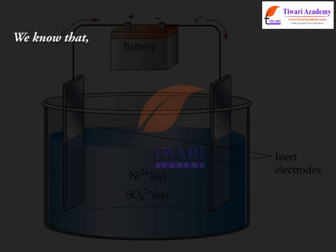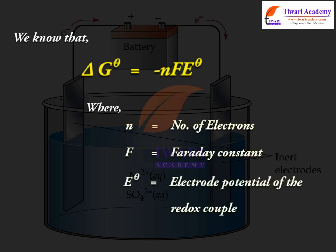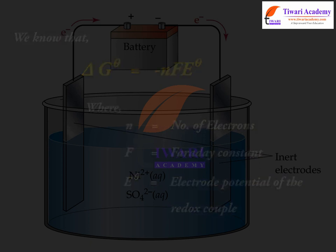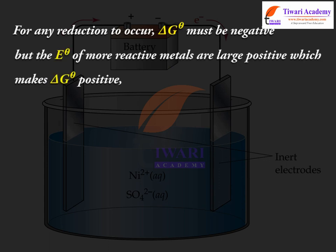We know that ΔGθ is equal to minus nFEθ, where n is equal to the number of electrons, F is equal to the Faraday constant, and Eθ is equal to the electrode potential of the redox couple. For any reduction to occur, ΔGθ must be negative, but the Eθ of more reactive metals are large positive, which makes ΔGθ positive, hence their reduction is difficult.